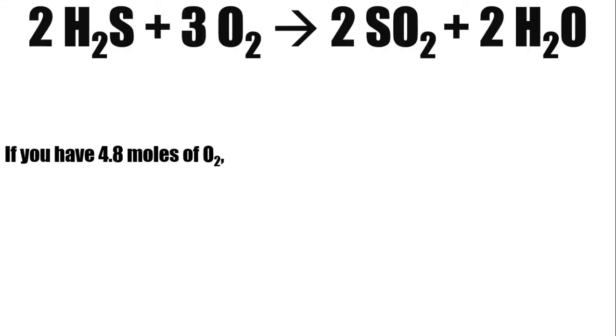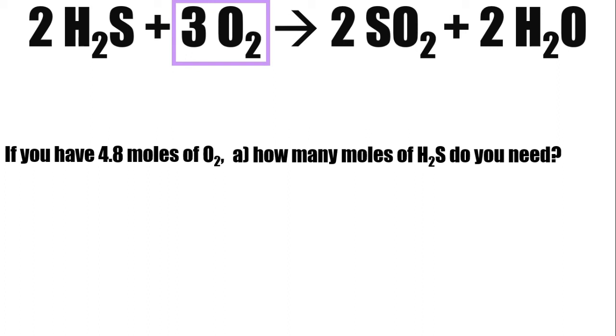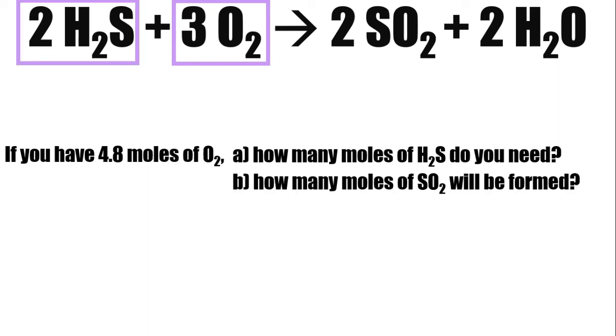What if you have 4.8 moles of oxygen? How many moles of hydrogen sulfide do you need? And how many moles of sulfur dioxide will be formed? Again, we'll have the two ways to solve this. Let's discuss it very briefly. Let's start with 4.8 divided by 3, which is the coefficient of oxygen. This will give us 1.6.